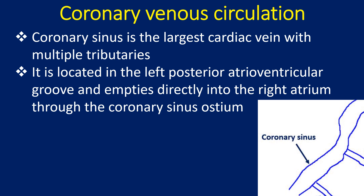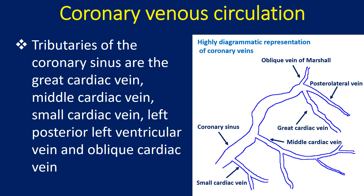The coronary sinus is the largest cardiac vein with multiple tributaries. It is located in the left posterior atrioventricular groove and empties directly into the right atrium through the coronary sinus ostium. Tributaries of the coronary sinus are the great cardiac vein, middle cardiac vein, small cardiac vein, left posterior left ventricular vein, and oblique cardiac vein.